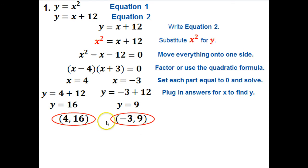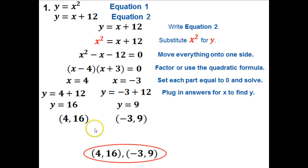For the online system, write each ordered pair with a comma between them. So you'll write your answer as: (4, 16), (-3, 9). You can also write (-3, 9) first and then (4, 16)—either way, the computer will accept it.